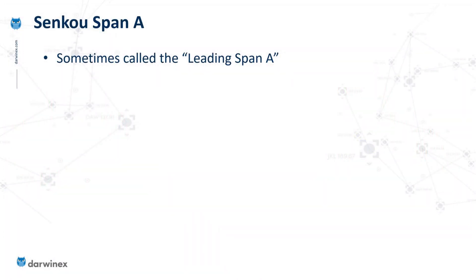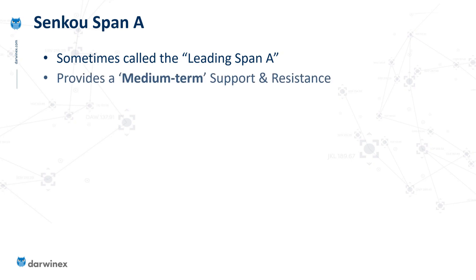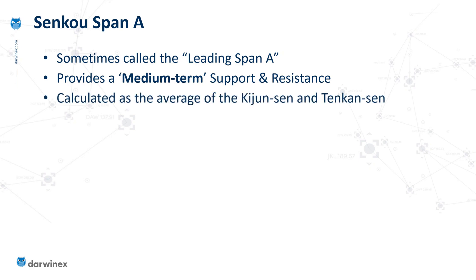Senku Span A is sometimes called Leading Span A because of the fact that it's plotted 26 periods ahead of price action. The idea behind this line is that it provides a medium-term indication of support and resistance. And just like for the other lines of Ichimoku, the calculation here is also very simple — it's just the average of the Kijun Sen and the Tenkan Sen lines, but then plotted 26 periods ahead.